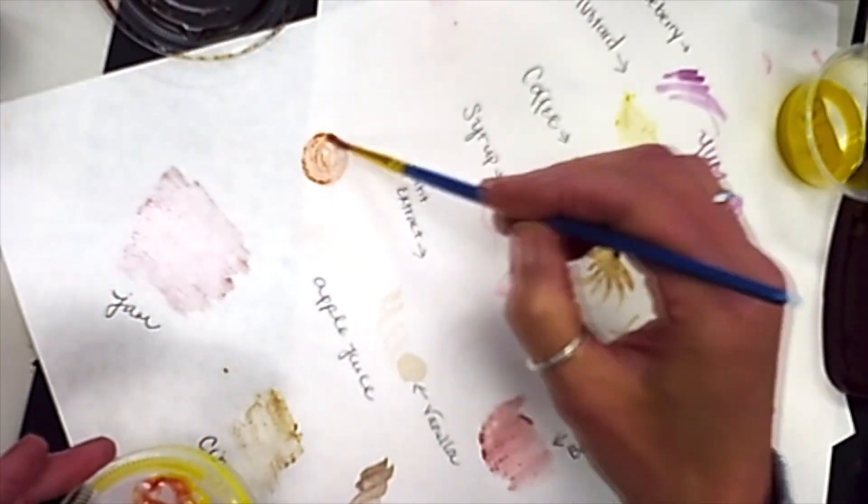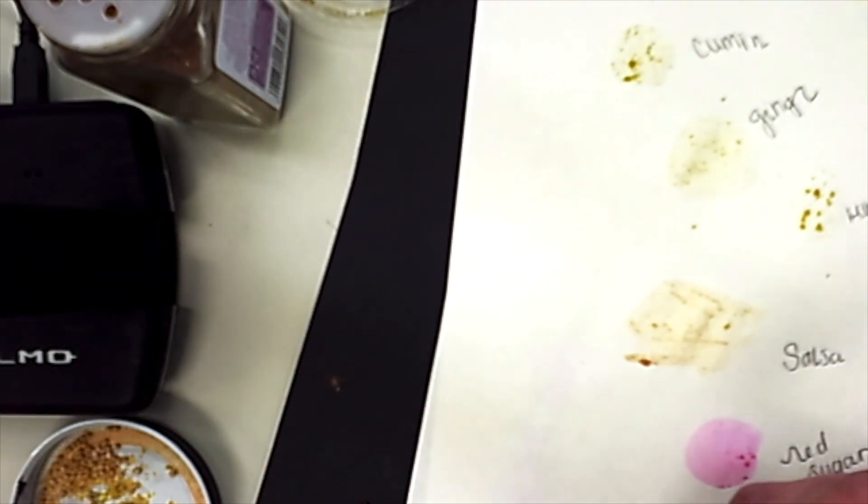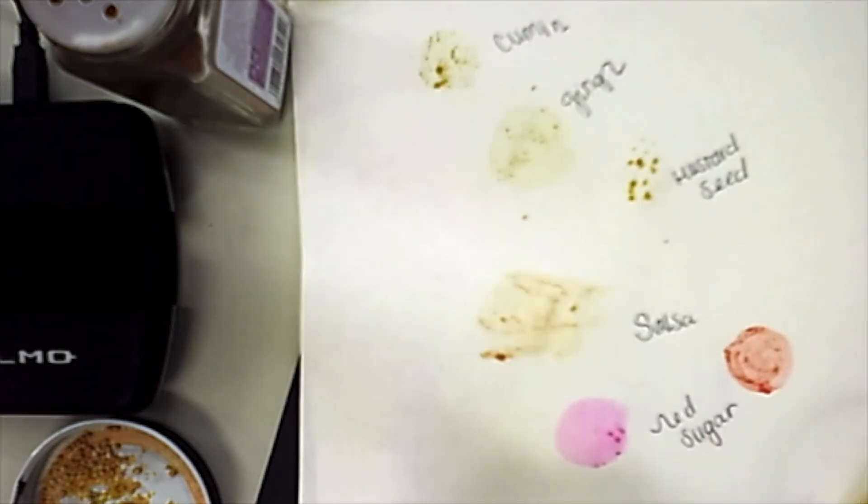So I started mixing my different things together, thinking about maybe what I could paint with these now. That one is red sugar, like the kind you decorate a cake with. It took a little while for it to dissolve.